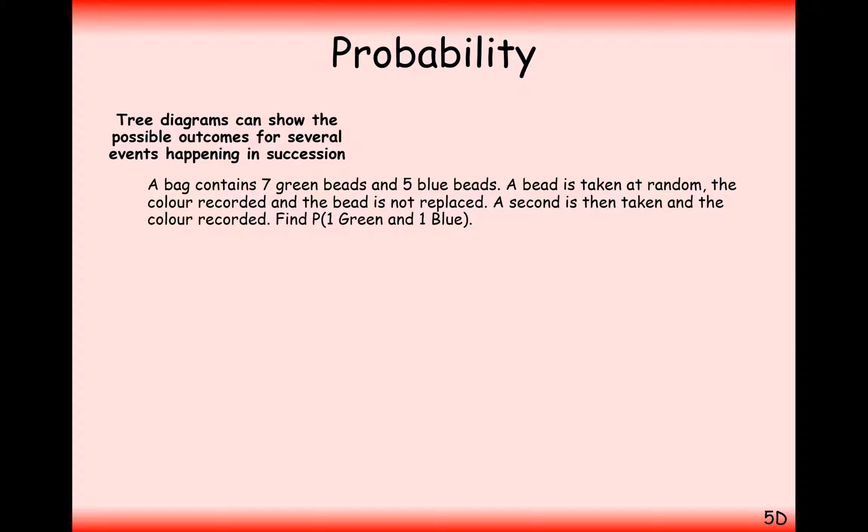Let's go through an example here. A bag contains seven green beads and five blue beads. A bead is taken at random, the colour recorded and the bead is not replaced. A second bead is taken and the colour recorded. Find the probability that we have one green and one blue bead after we've pulled our two beads out of the bag.